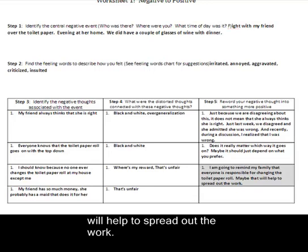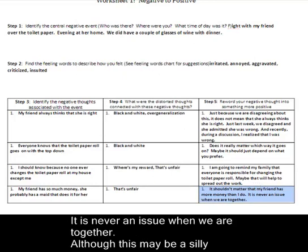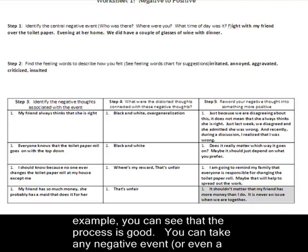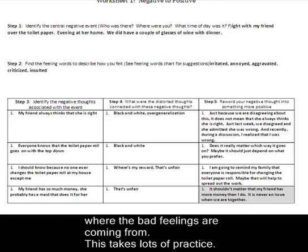For the last thought — my friend has so much money that she probably has a maid to do it for her — my new thought is: it shouldn't matter that my friend has more money than I do; it's never an issue when we're together. Although this is a silly example, you can see that the process is good. You can take any negative event or even a foul mood and use this process to figure out where the bad feelings are coming from. This takes lots of practice.